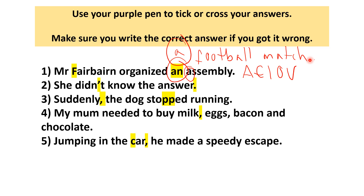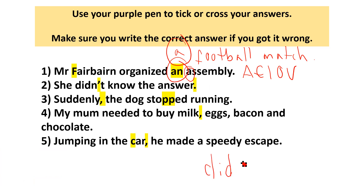Number two: she didn't know the answer. Obviously we have the full stop at the end. And 'didn't' is a combination of 'did' and 'not', so we need to use an apostrophe to join the two words together.